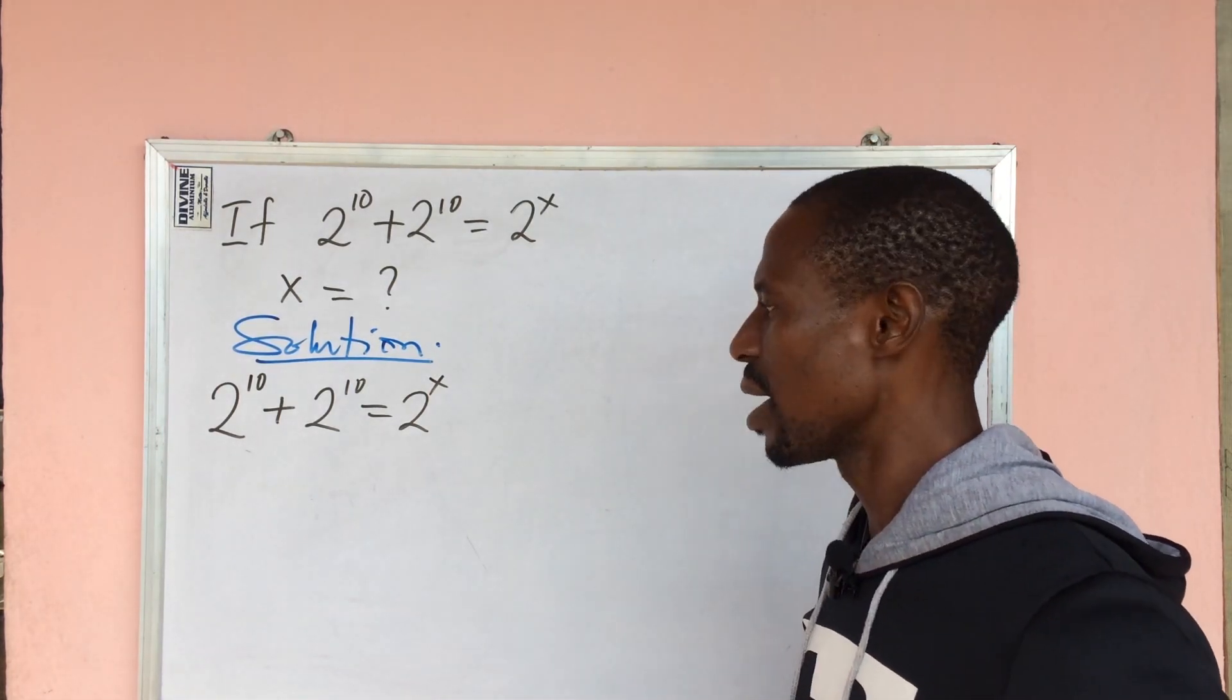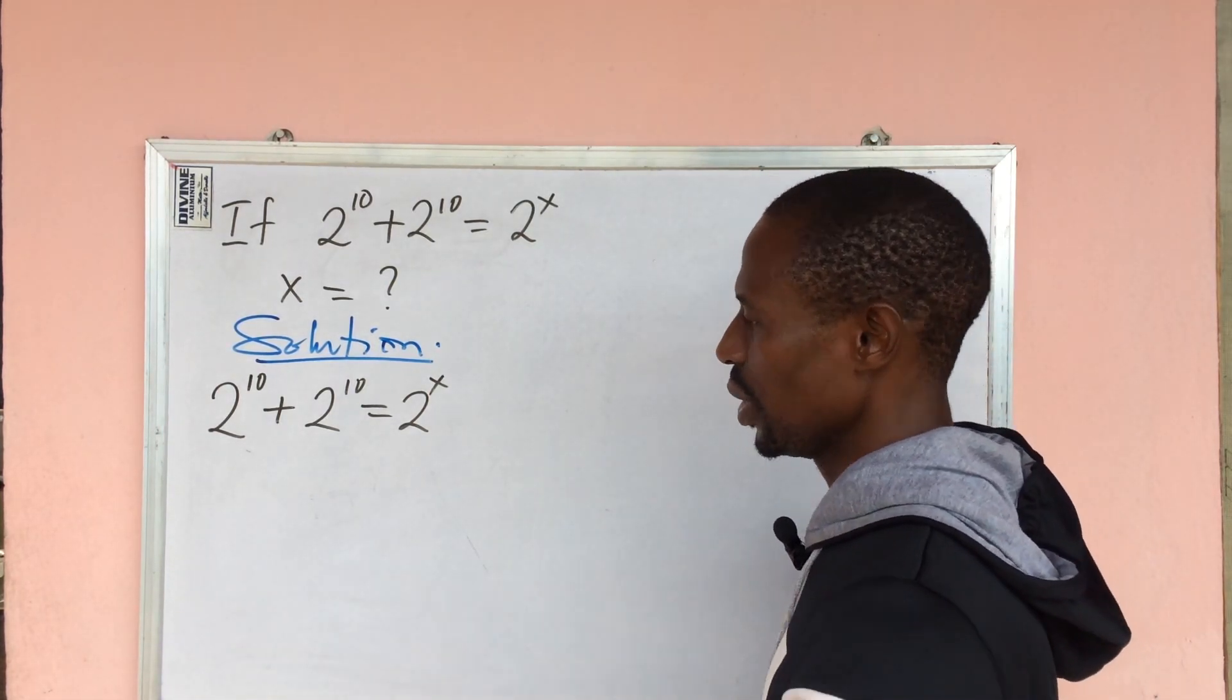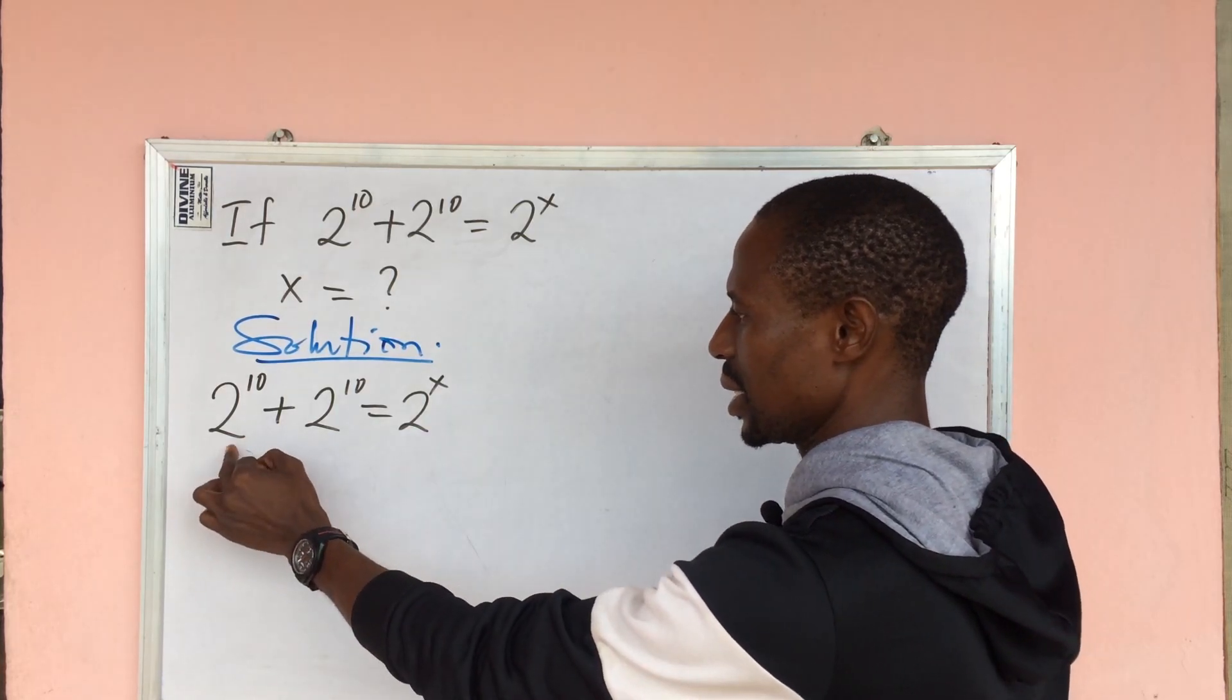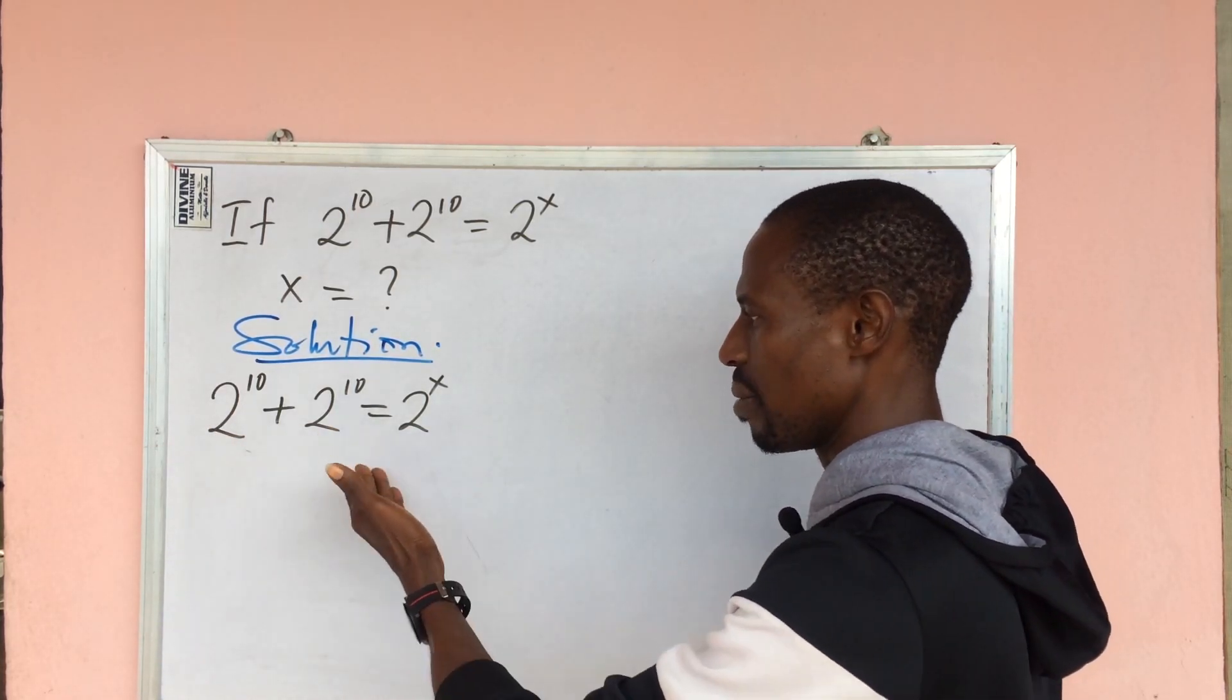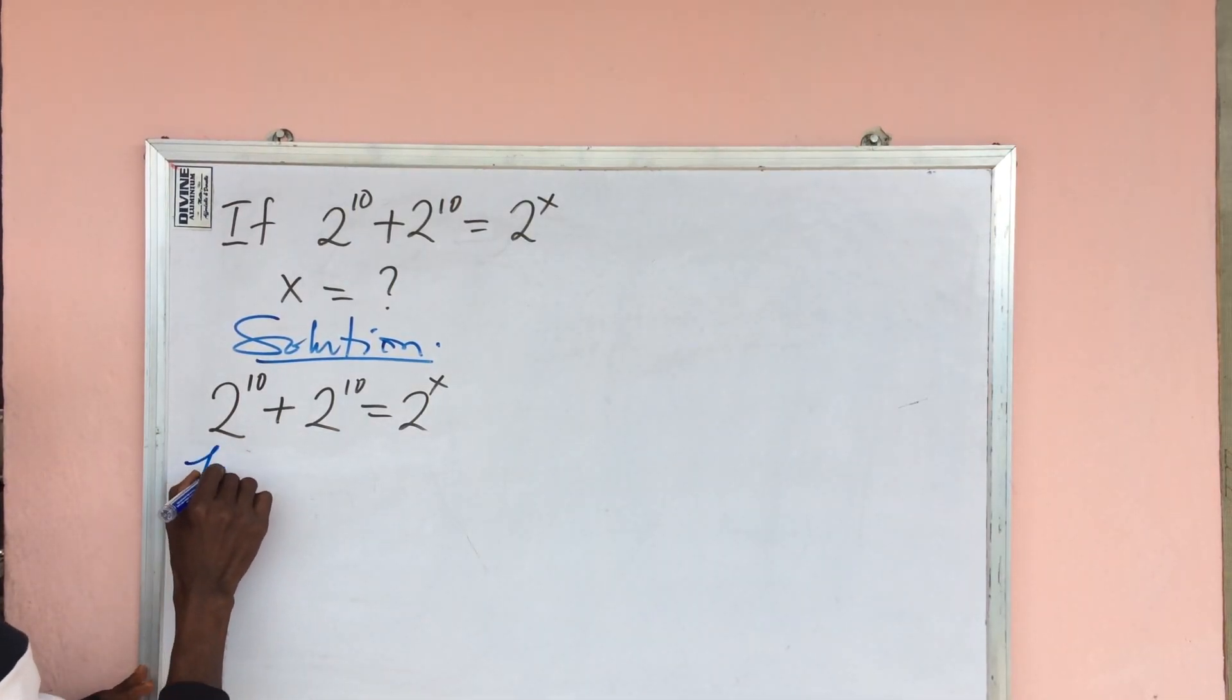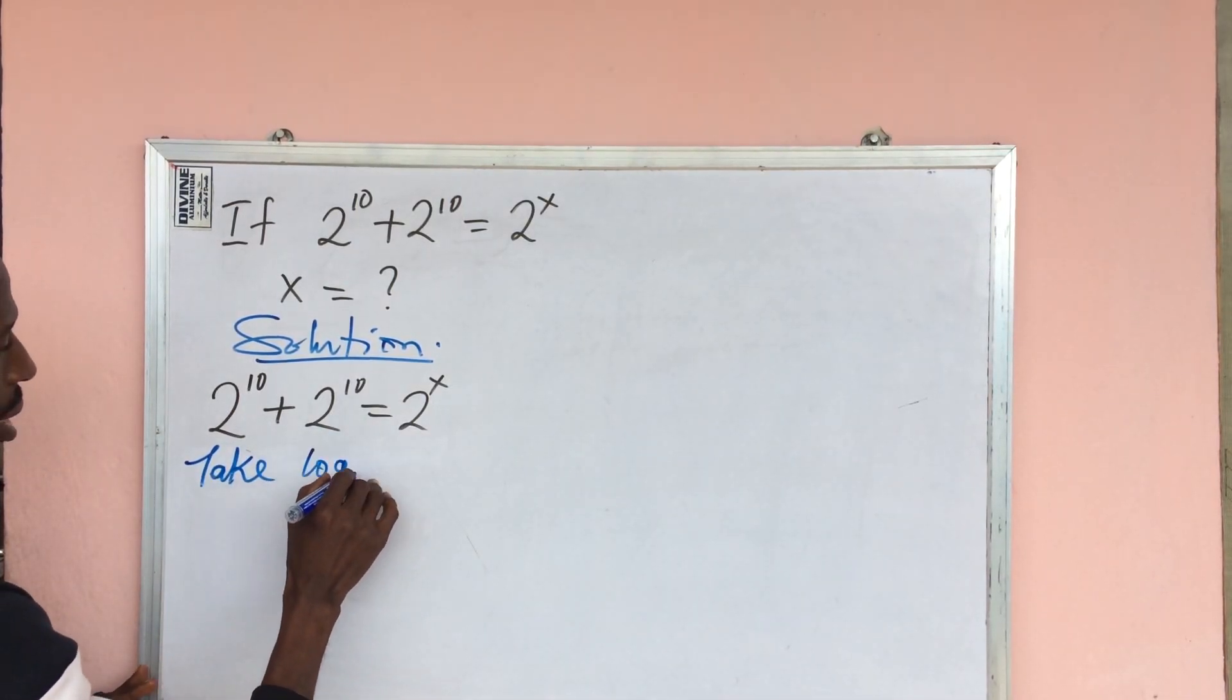All we need to do is to look at the base number. This is 2, this is 2, this is 2. So since they are having a common base, take logarithm to base 2 of both sides.